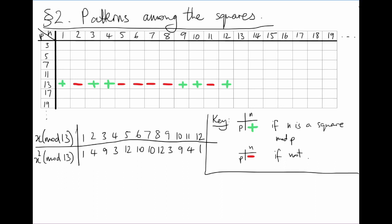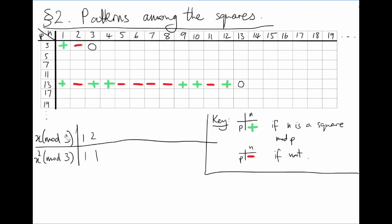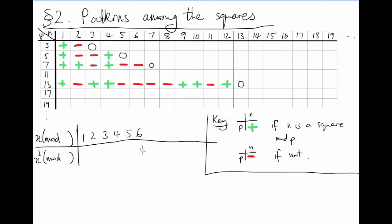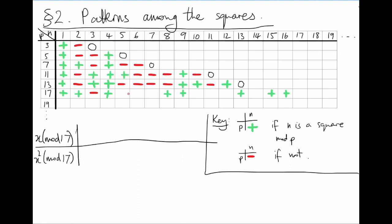I've stopped at this point because we've reached 0 mod 13, so after this point the pattern just repeats itself. Here are the nonzero squares mod 3 — actually the only one is 1, so 2 must be a non-square. The nonzero squares mod 5 are 1 and 4, which leaves 2 and 3 to be non-squares. Mod 7, they're 1, 2, and 4. Mod 11, they're 1, 3, 4, 5, and 9. And mod 17, mod 19, and so on.